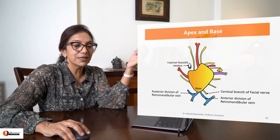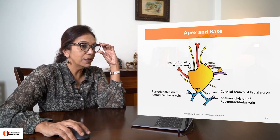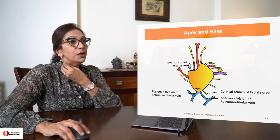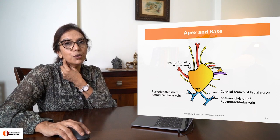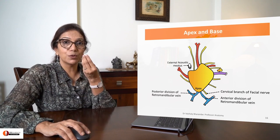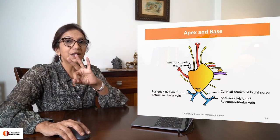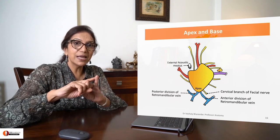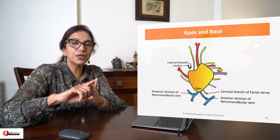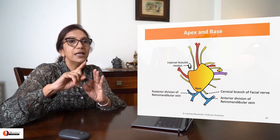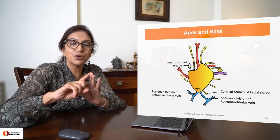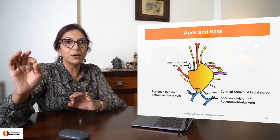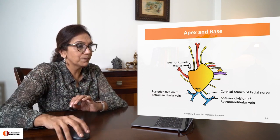More about this we will discuss subsequently. From the lower end of your parotid gland — from the apex — you have three structures emerging: the cervical branch of facial nerve, and the anterior and posterior divisions of the retromandibular vein.